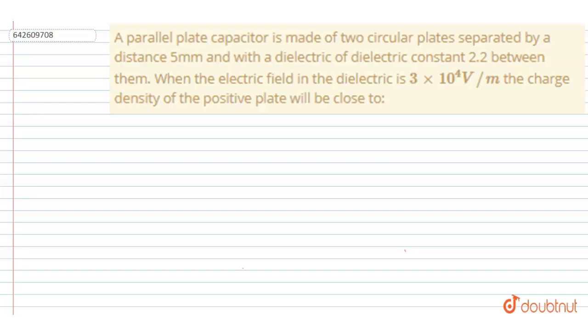is made of two circular plates separated by a distance of 5mm with a dielectric constant 2.2 between them. Now when the electric field in the dielectric is 3 × 10^4 volt per meter, then the